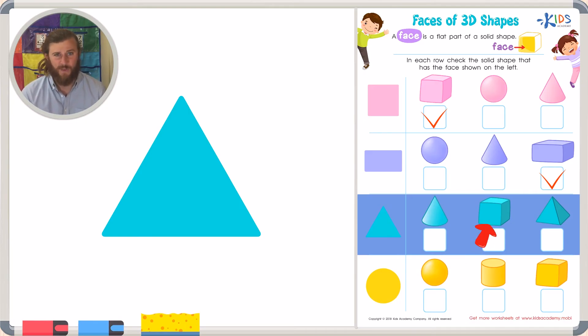Our second shape is a cube. This also does not have a triangular face, so this can't be correct either. Finally, we have our pyramid, and I can see quite a few triangular faces on our pyramid. So I know that our pyramid is the correct answer. Let's go ahead and check our pyramid because it does have a triangular face.